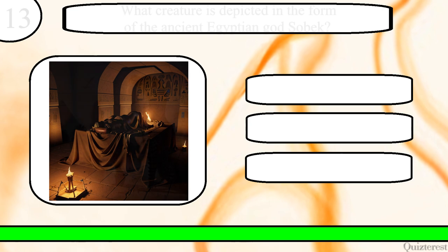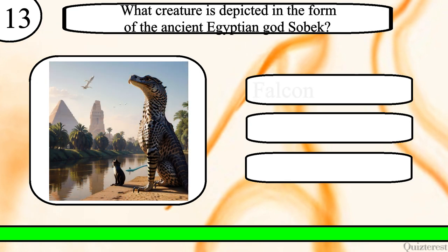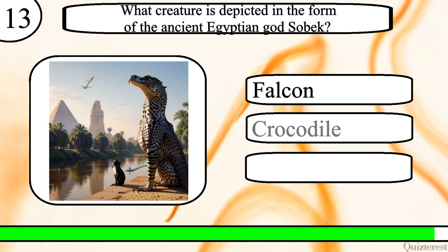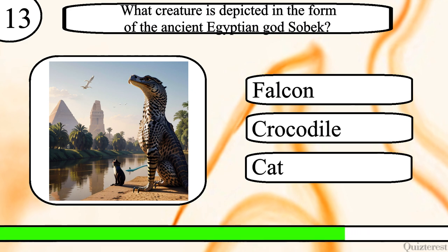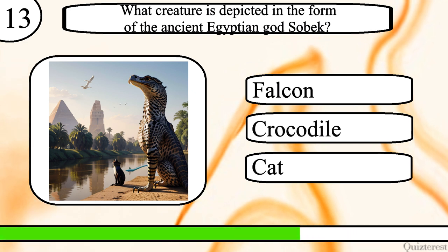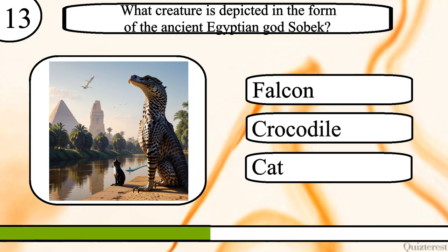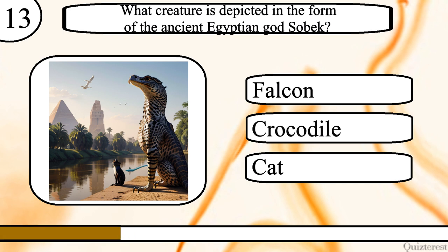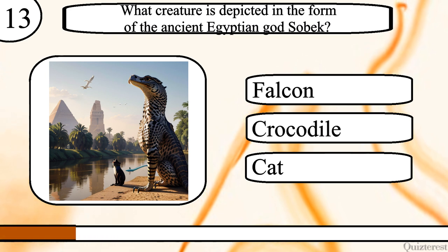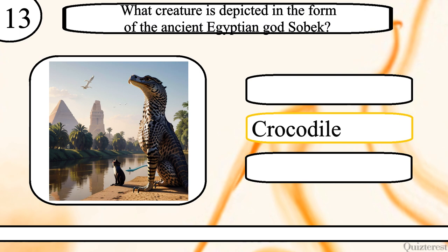Question 13. What creature is depicted in the form of the ancient Egyptian god Sobek? Falcon, crocodile or cat? The correct answer is crocodile.